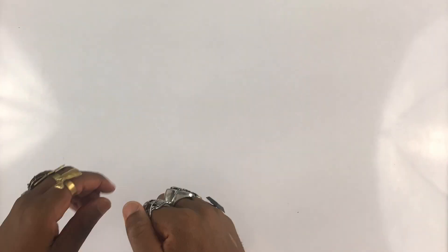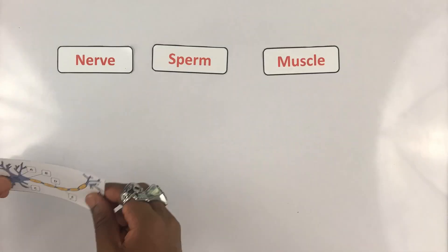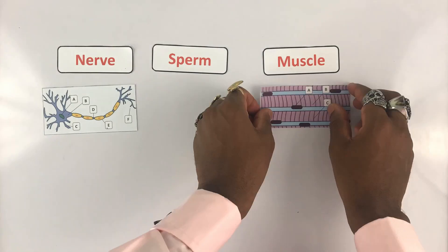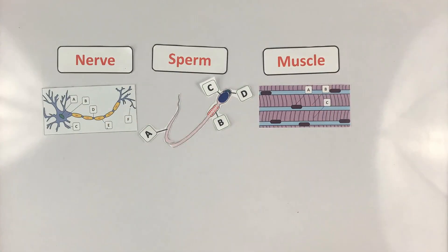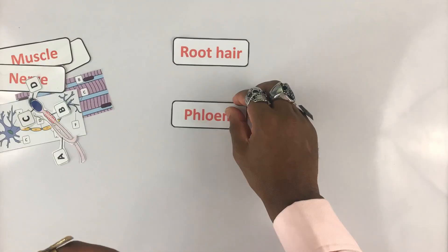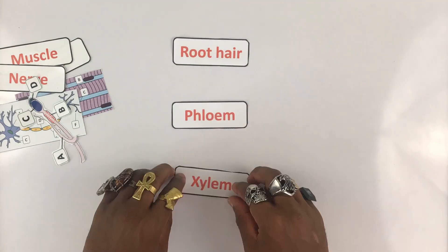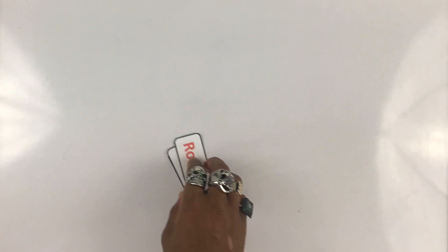In the last video we looked at specialized animal cells. Now in this video we're going to look at three specialized plant cells: the root hair cell, the phloem, and the xylem cell.